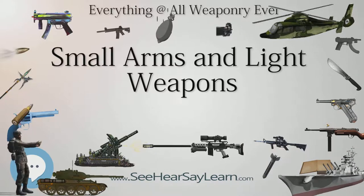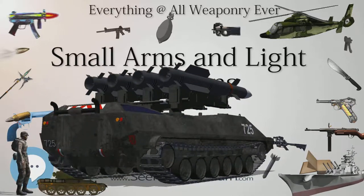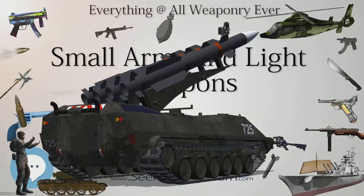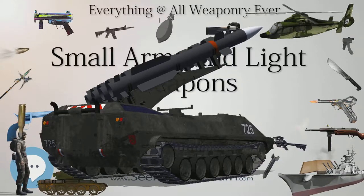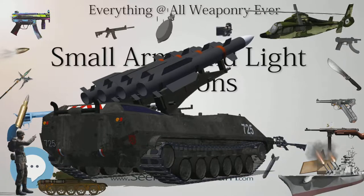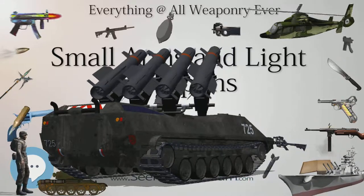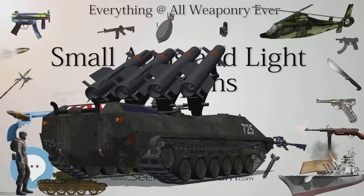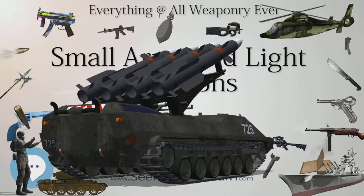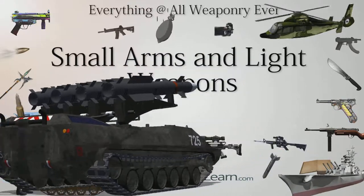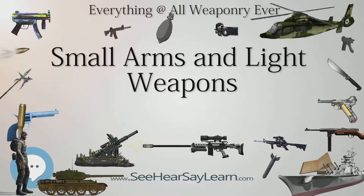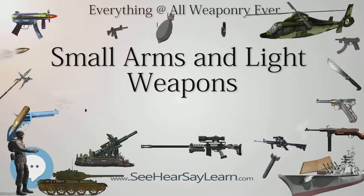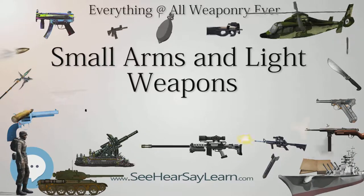Light weapons include, inter alia, general purpose or universal machine guns, medium machine guns, heavy machine guns, rifle grenades, under-barrel grenade launchers and mounted grenade launchers, portable anti-aircraft guns, portable anti-tank guns, recoilless rifles, man-portable launchers of anti-tank missile and rocket systems, man-portable launchers of anti-aircraft missile systems, and mortars of a caliber of less than 100 mm.